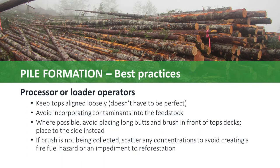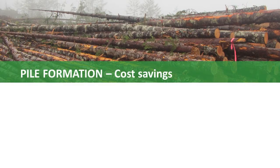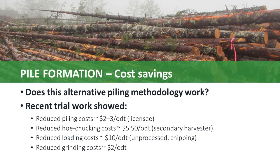Processor and loader operators should follow the general guidelines on the screen if there is a possibility of secondary harvest. Operators sometimes question the value of oriented piling; however, there are benefits for the licensee in the form of reduced piling and burning costs. There are also reduced costs for the secondary harvester when moving residues to roadside, loading processed residues for transport, and in grinding at roadside. As discussed earlier, there is no increased cost to processors when building oriented piles, provided that operators are cognizant of the balance between productivity and pile neatness — taking too much time to make piles too neat will affect productivity.